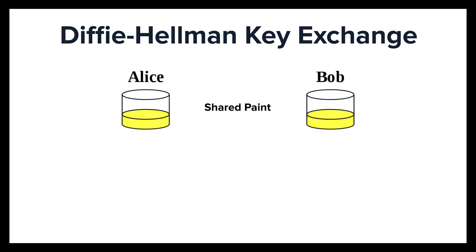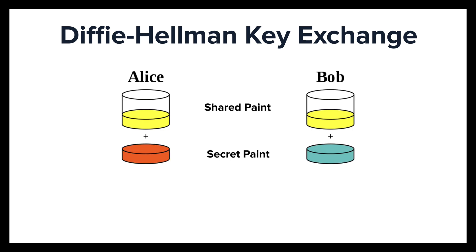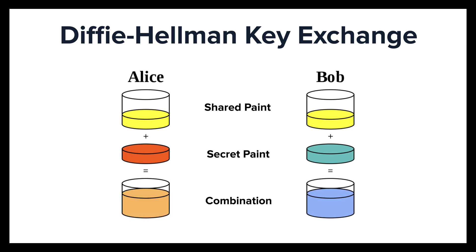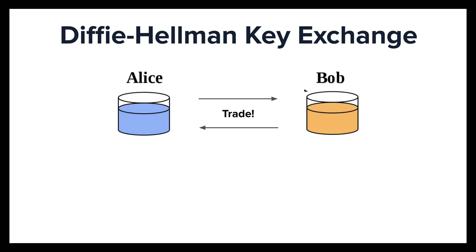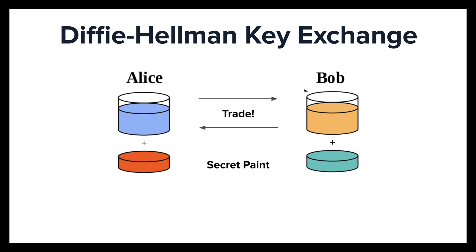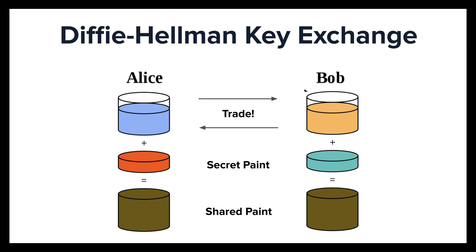Here's a visual approach of how it's possible to create a secret key without the chance of the private key being intercepted. Instead of keys, let's use paint. The yellow paint is the public key. Alice has a private dark orange paint and Bob has a private teal paint. They each separately mix their private paint with the public yellow paint. Then they trade combinations, so Alice now has the blue paint and Bob has the orange. Now they each add their secret paint colors again. This results in a shared paint color without being able to figure out the private colors.